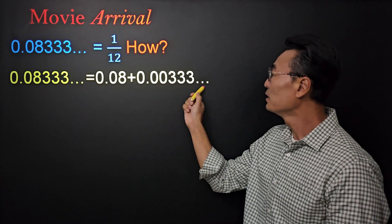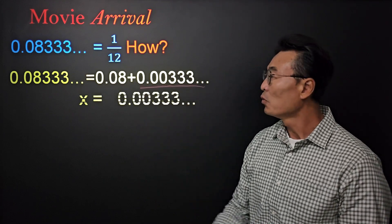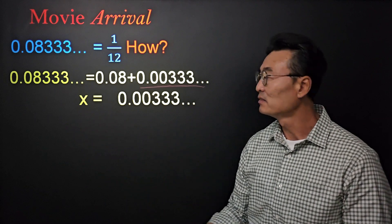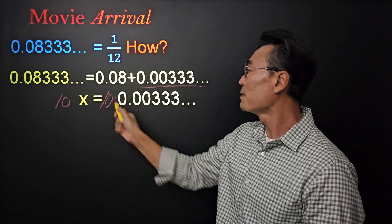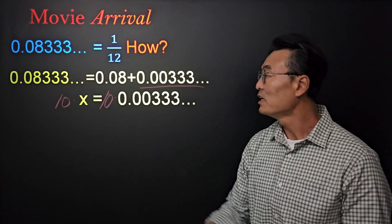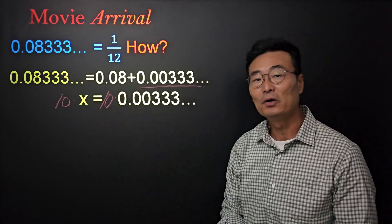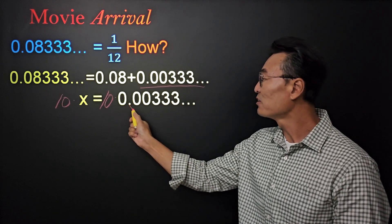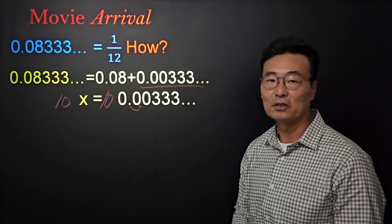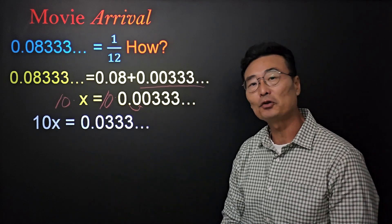We're going to let the repeating portion equal x, and then we're going to multiply by 10 on the left side and multiply by 10 on the right side. When we multiply 0.003 repeating by 10, we end up moving that decimal one to the right, where we get 10x equals 0.03 repeating.